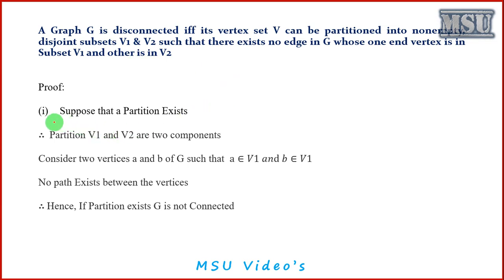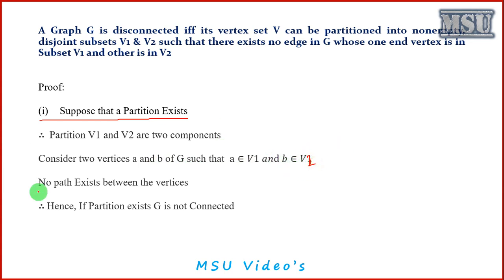First, suppose a partition exists. Therefore V1 and V2 are two components. Consider two vertices A and B of G such that A belongs to V1 and B belongs to V2. Since we know there is no edge between them when a partition exists, no path exists between vertices A and B. Hence if the partition exists, G is not connected.